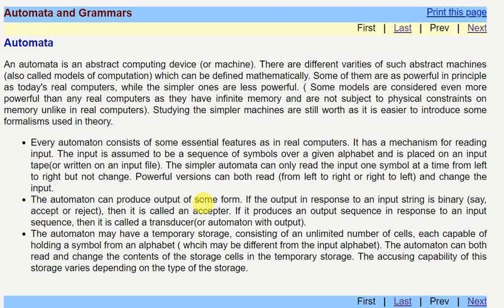Automata is an abstract computing device which can be defined mathematically. These abstract devices are also called models of computation. Some of them are very powerful in today's life, like real-time computers, while simpler ones are less powerful. We will study the simpler machines as it is easier to introduce some formalisms used in the theory.